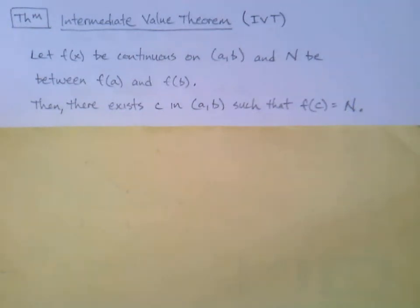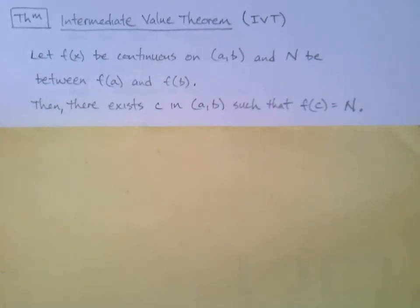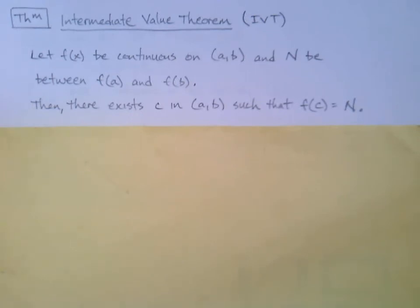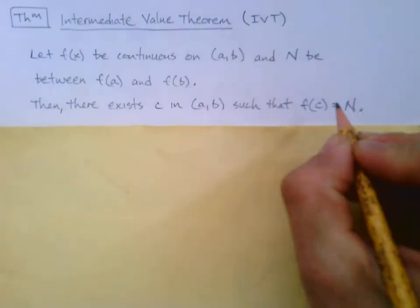This section ends with a big theorem called the Intermediate Value Theorem, sometimes referred to as IVT. Let f(x) be continuous on [a, b], and let N be somewhere between f(a) and f(b) — so N is a y-value between the starting and ending y-values of our interval. Then there exists c in (a, b) such that f(c) = N.